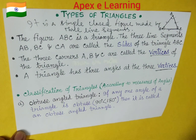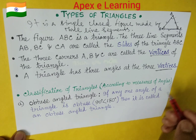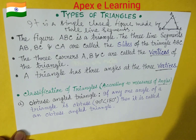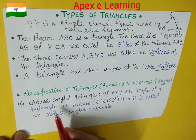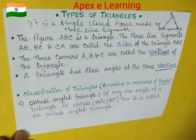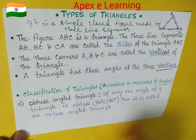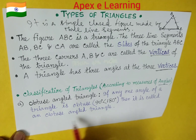Next is types of triangles. According to the measures of the angles, triangles are basically three types. One is the obtuse angle triangle. If any one angle of a triangle is obtuse, then it is called an obtuse angle triangle.